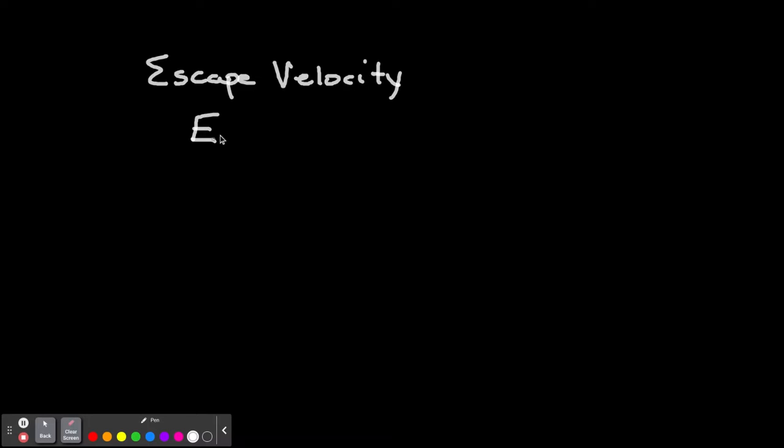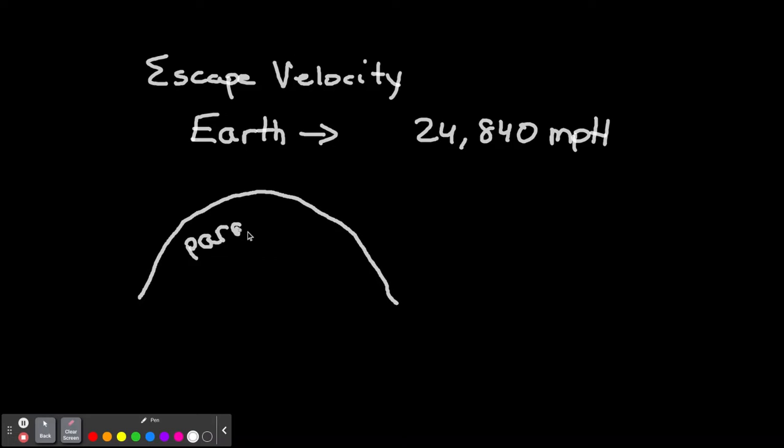So on Earth, in case you're wondering, that's where we live, right? Escape velocity on Earth is about 24,840 miles per hour. You need to go that speed in order to escape Earth's velocity. So if you don't go that speed, you're not going to break through. Eventually gravity will take you back down.